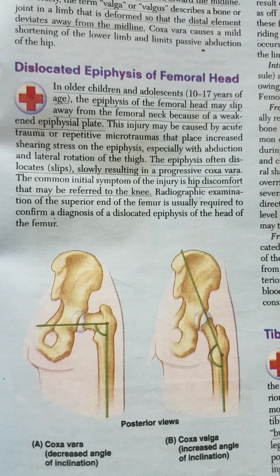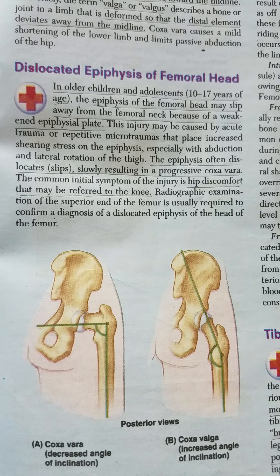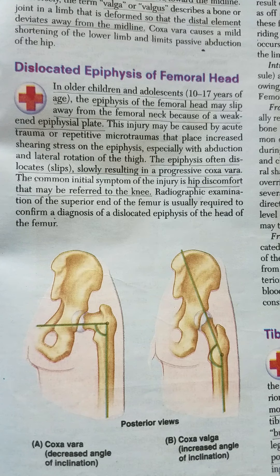Coxa valga could be due to developmental delays — for example, in cerebral palsy. It could also be associated with congenital dislocation of the hip. In coxa valga, adduction of the hip is limited, whereas in coxa vera, abduction of the hip joint is limited.